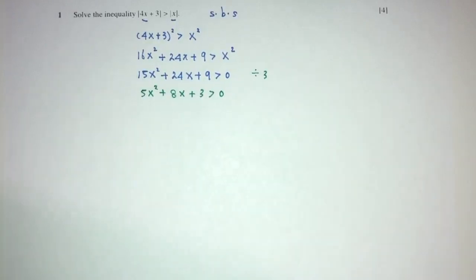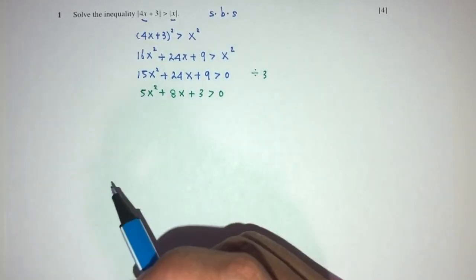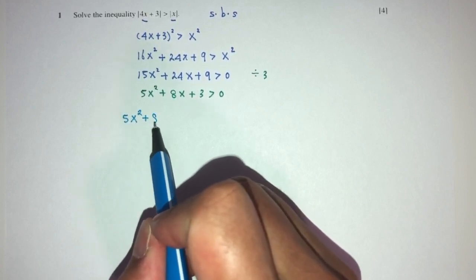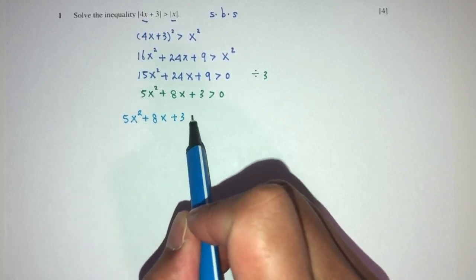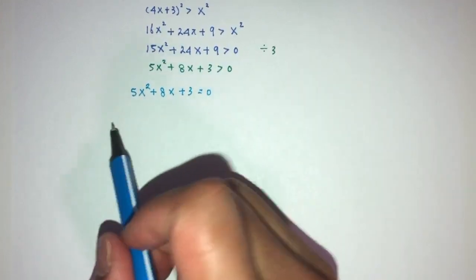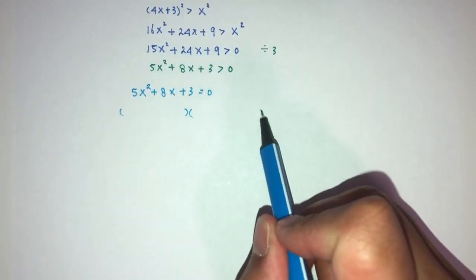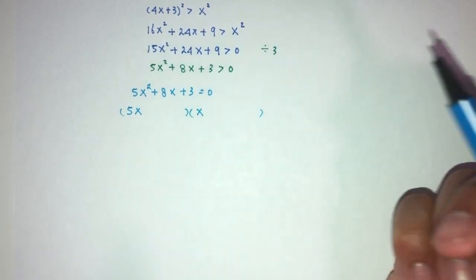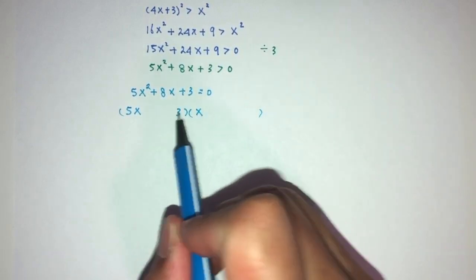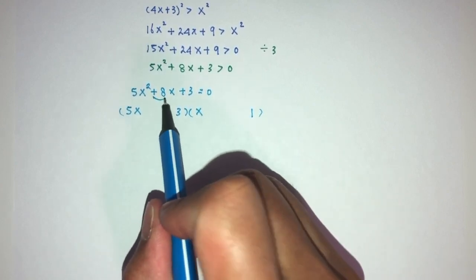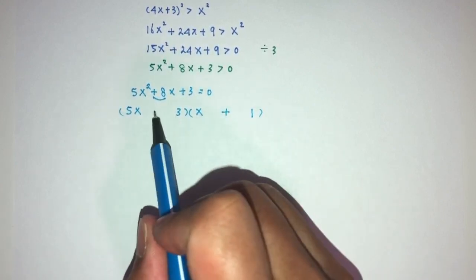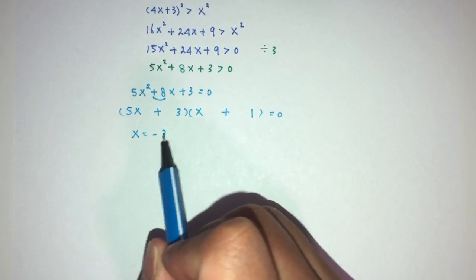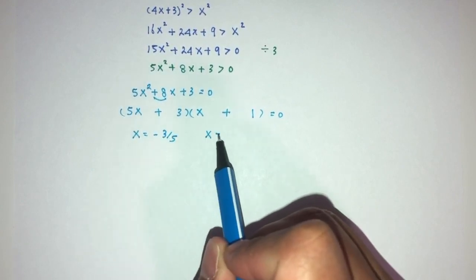We have to find the critical values of this equation. So we take the same equation and equate it to 0. Let's factorize. Here we have 3, which is 3 times 1. To get the value of +8, we need +5 and +3. So x = −3/5 or x = −1.